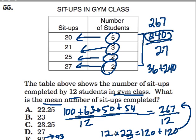I know that 12 times 23 is 276, which is bigger than my total here. That means that F and D and C and B are out, and the only answer that makes sense is 22.25.